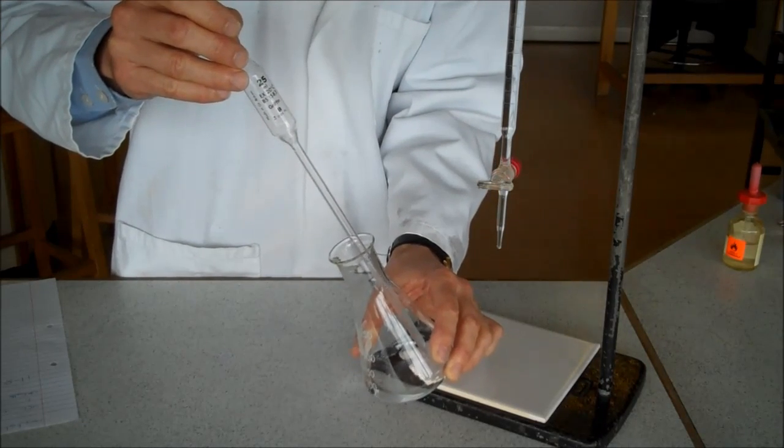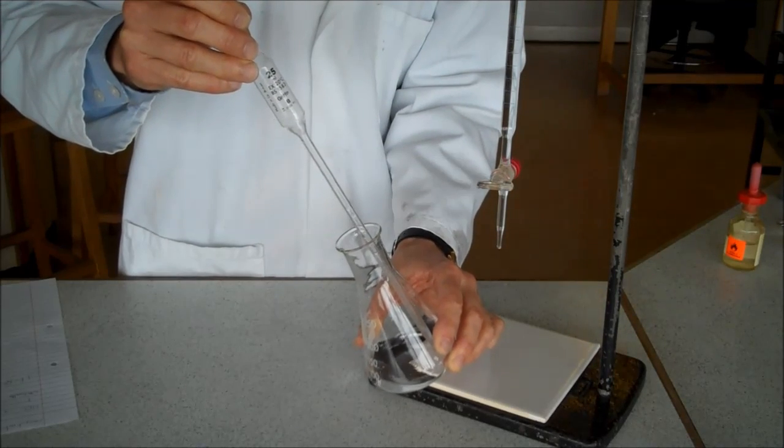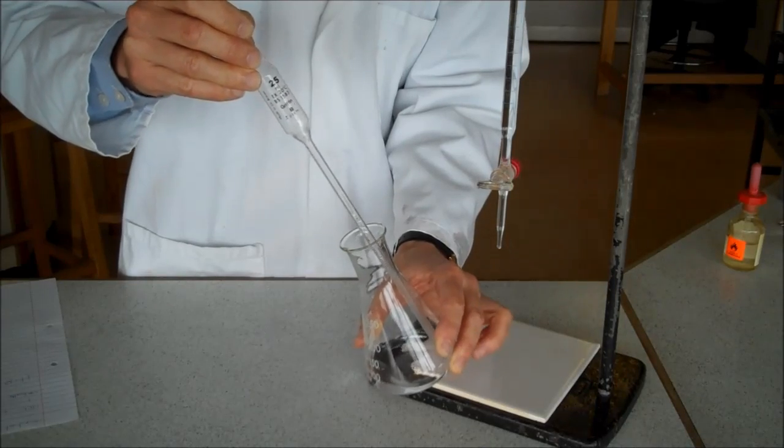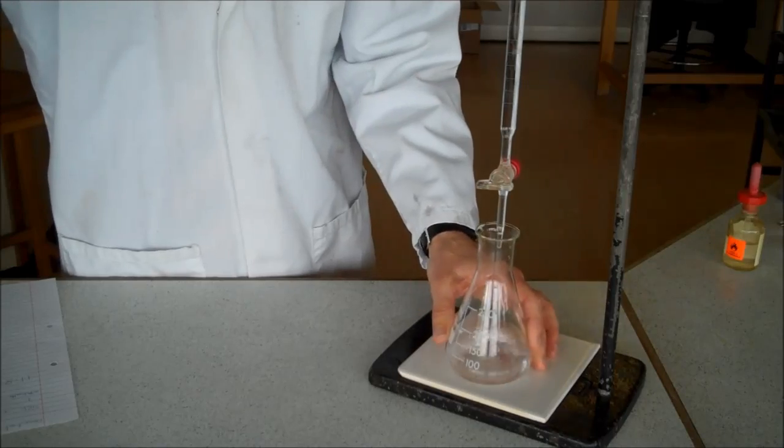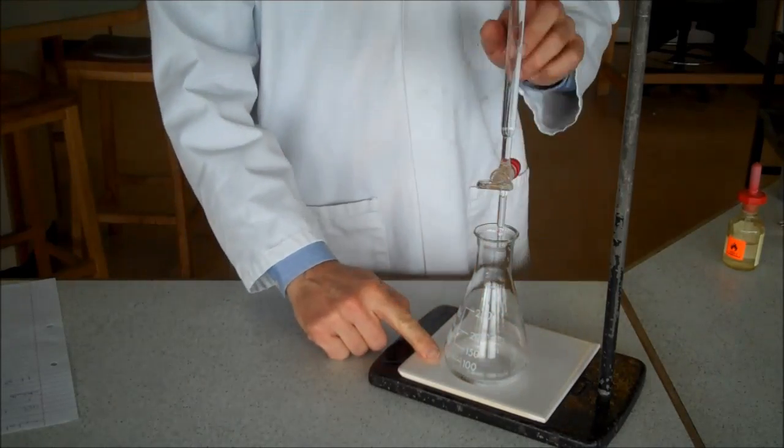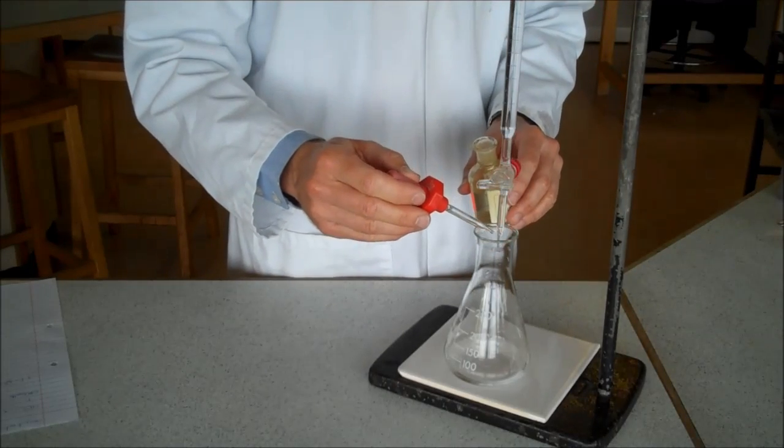Likewise, the burette is by far the best apparatus for adding our other chemical, in this case hydrochloric acid. Okay, so I've got alkali, acid in burette. Again, I need to use my indicator, phenolphthalein, 1, 2, 3, 4, 5.